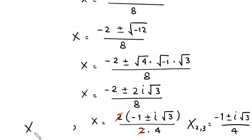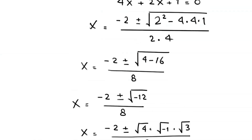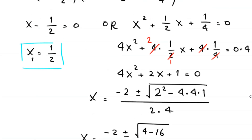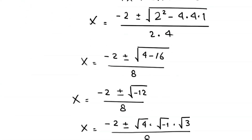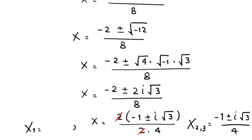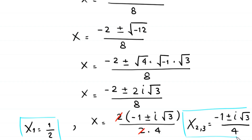So we have three solutions for this equation. The first solution is x₁ equal to 1 over 2, which is a real solution. The second and third solutions are x₂ and x₃ equal to negative 1 plus or minus i times root 3, all divided by 4, which are complex solutions.